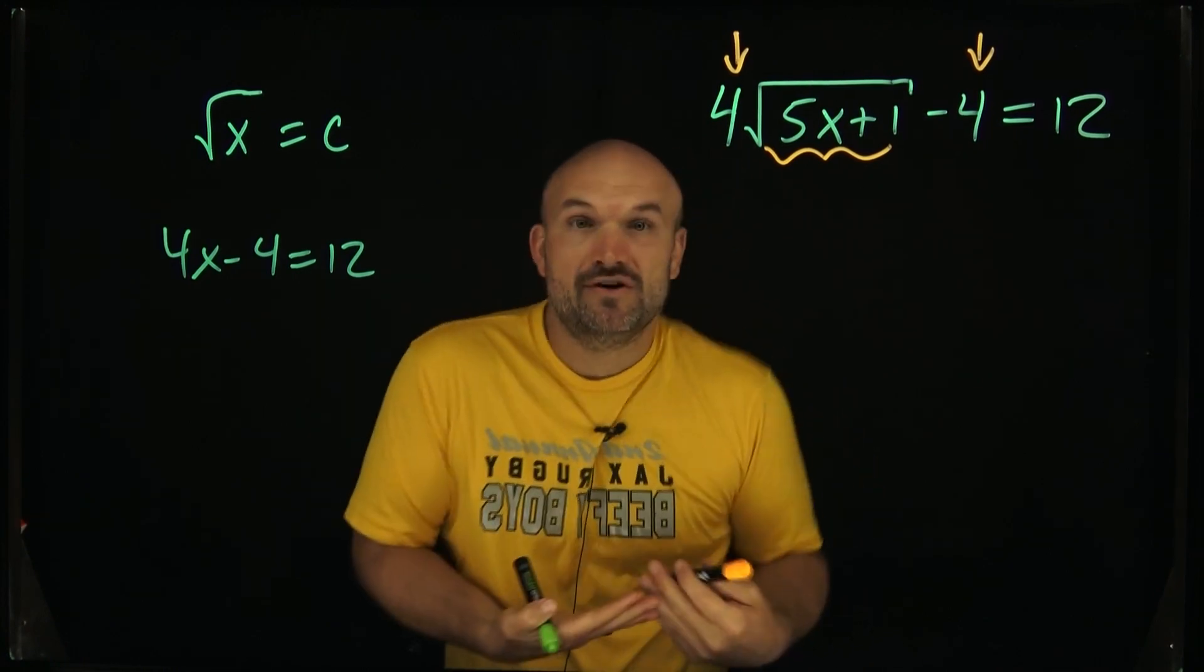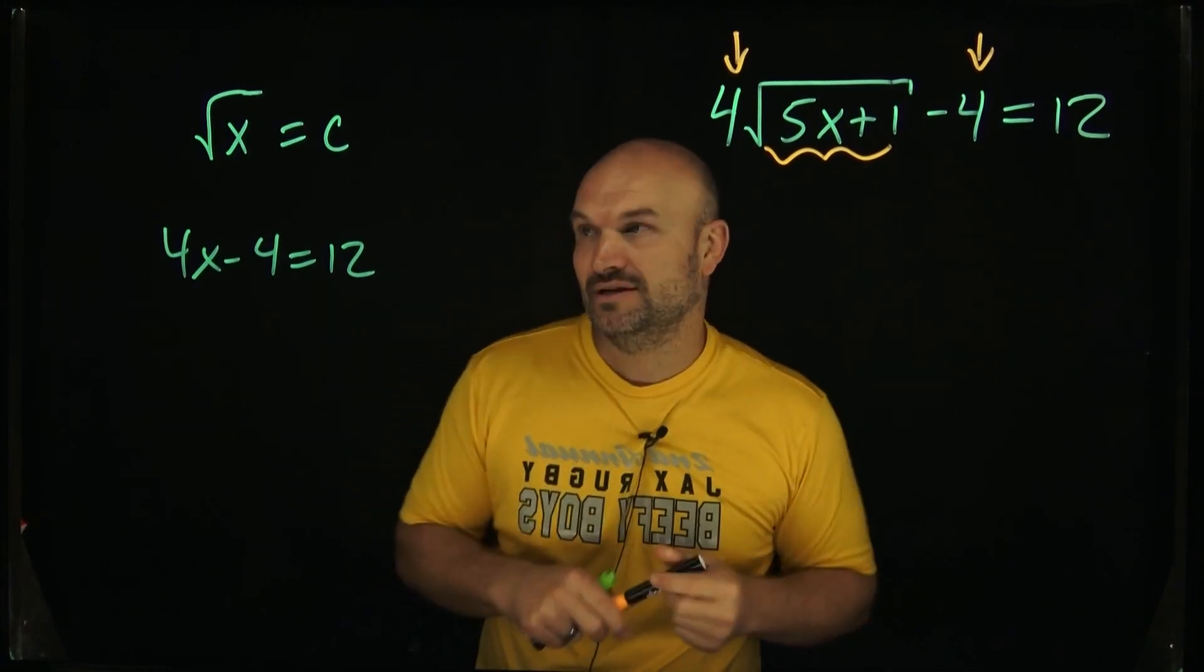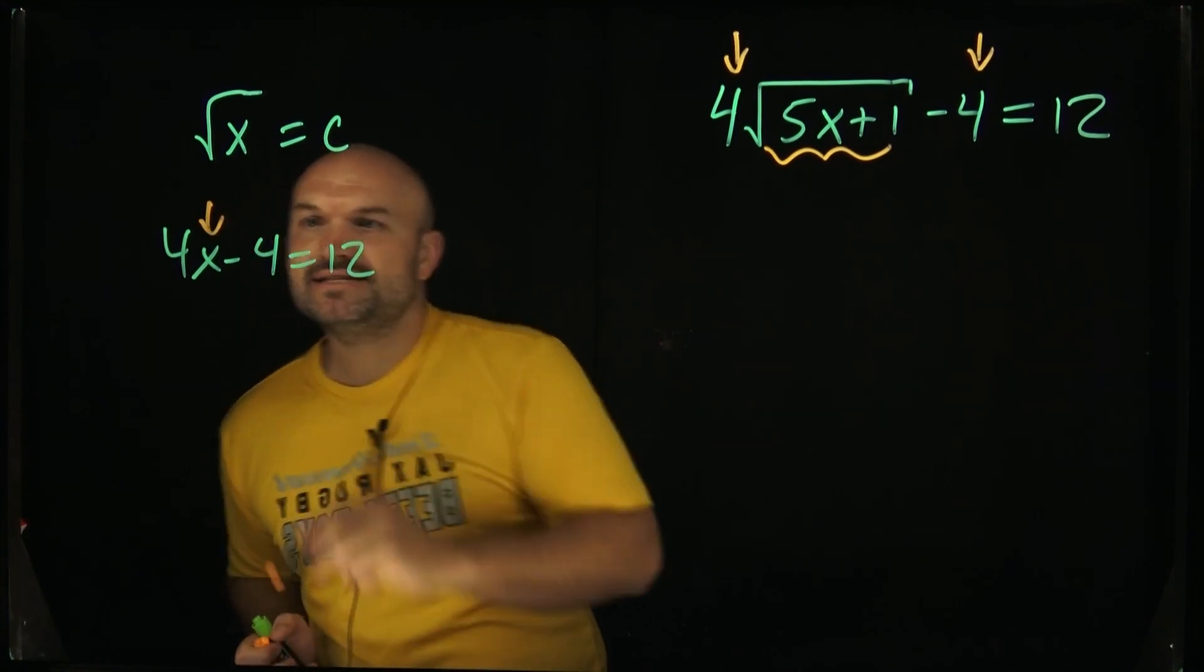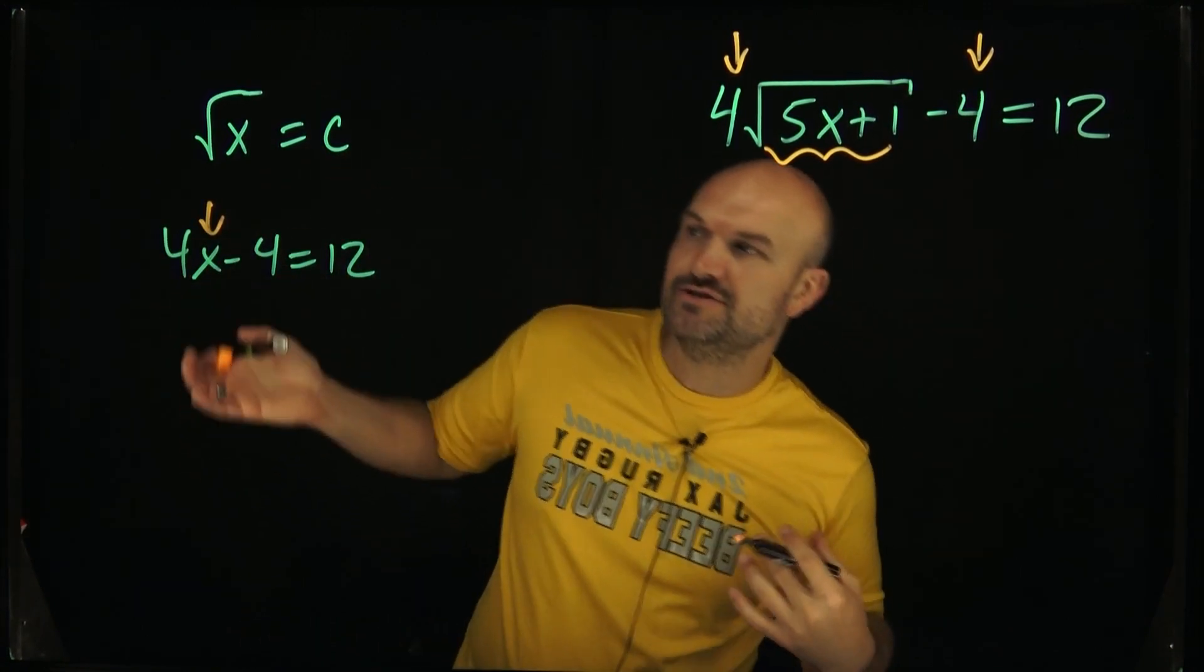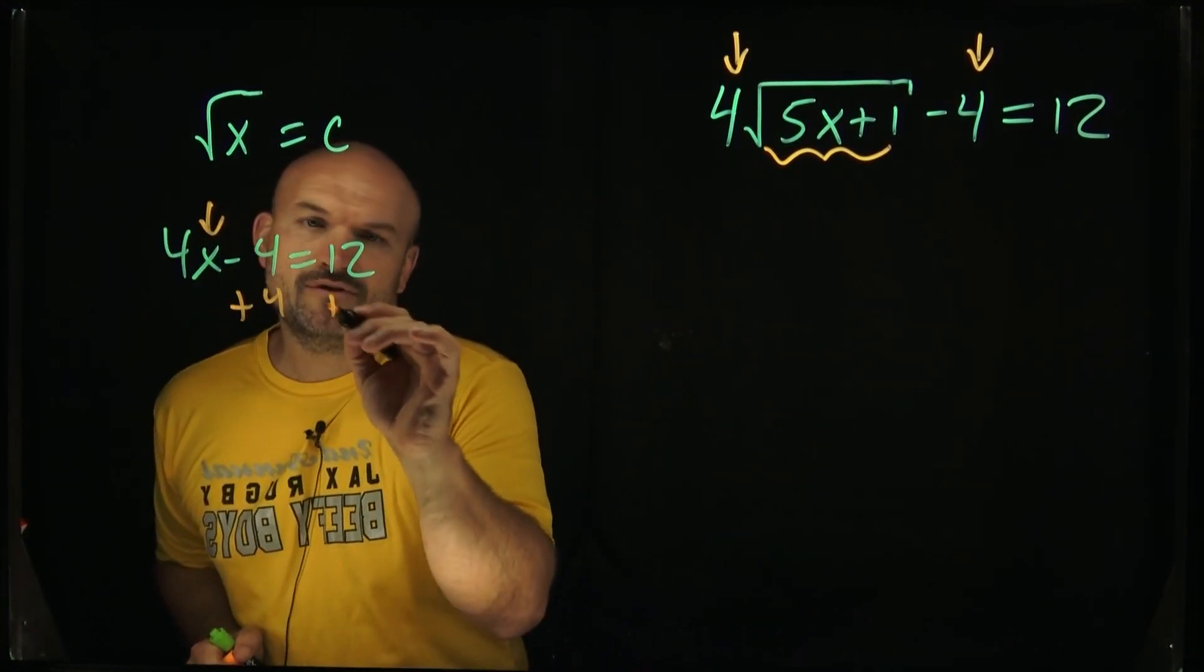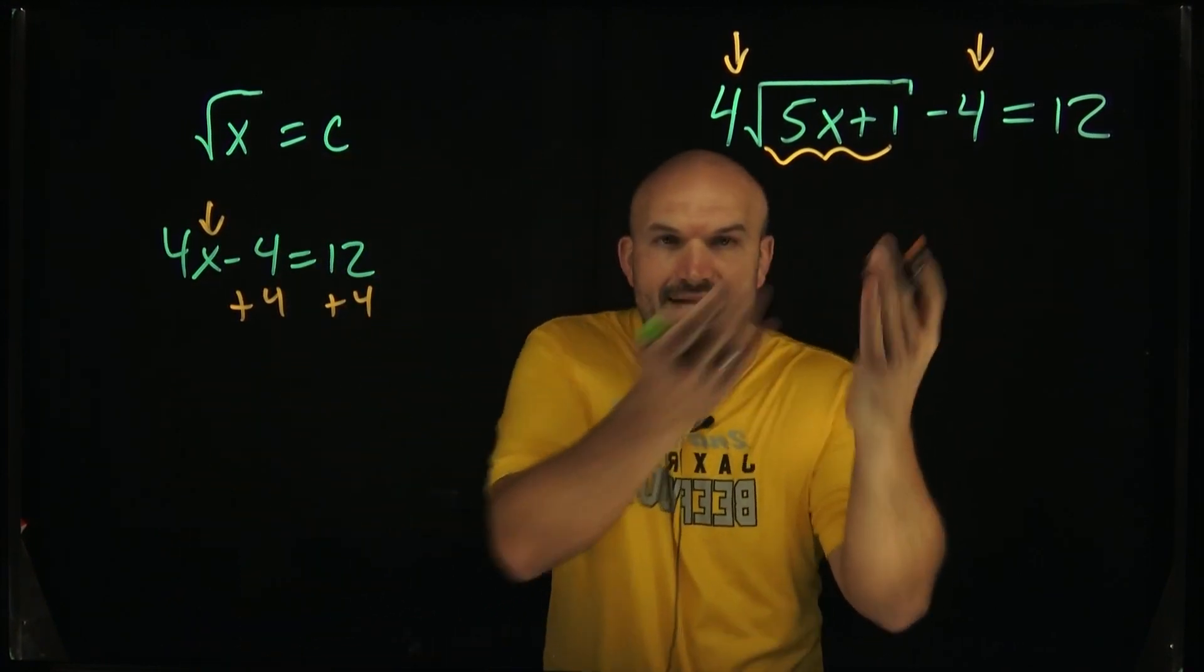So you can just kind of think about this and say, oh, if I was going to actually solve this two-step equation, first thing I'd do is add 4 on both sides. Well guys, look at this. It's the same thing, but instead of using the identity function, we're now using the square root function.